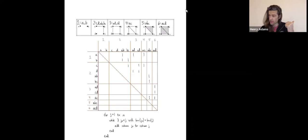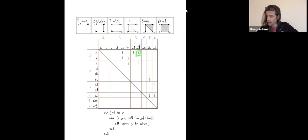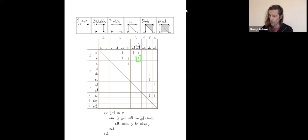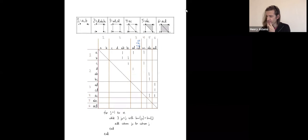I got a one here and a previous entry changed to zero. Let me record that I've added the column associated with edge AD to this column. I'm still on this column — not yet done. Here's my lowest one; there is an earlier column with its lowest one in the same row, so I add that earlier column, getting a zero here and a one here. Then my new lowest one also has an earlier column with a lowest one in the same row, so I add it and cancel — both ones become zeros. The column is now empty, so there's nothing more to do.